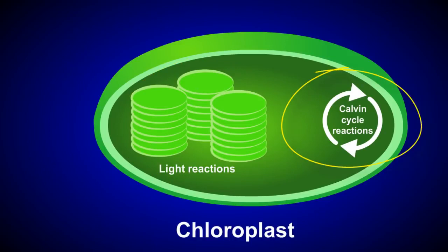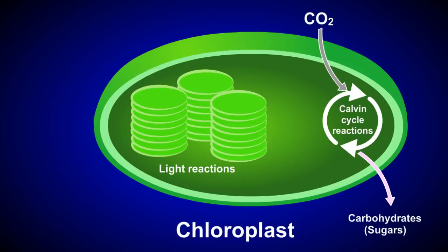The overall purpose of the Calvin cycle is to convert carbon dioxide from the atmosphere into carbohydrates, or sugars, which the plant needs to power its cellular activities and build new plant structures.